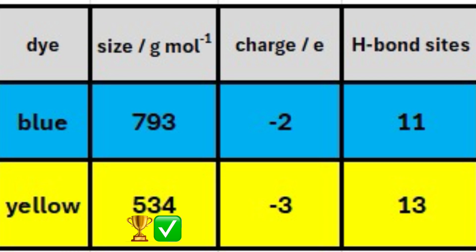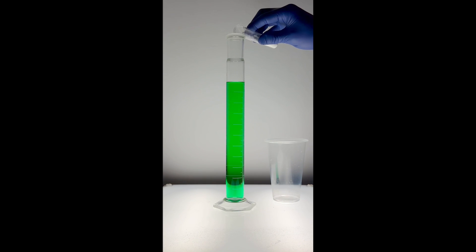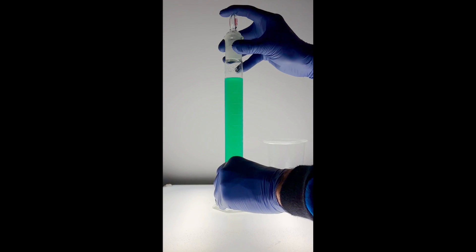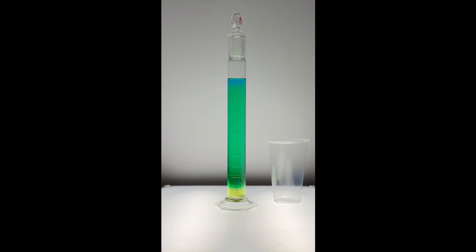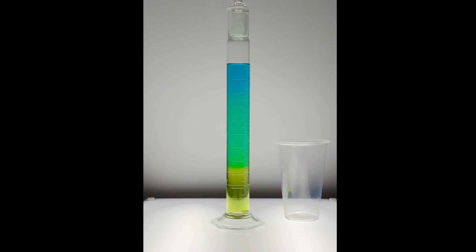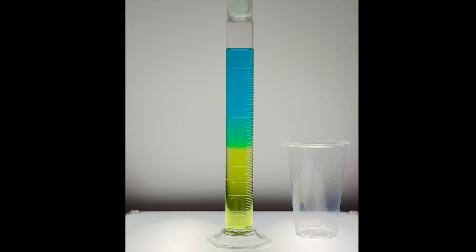So by considering molecular size, electric charge, and hydrogen bonding, we see the yellow dye is more strongly attracted to water than the blue dye. In fact, the attraction between the yellow dye and water is so strong that it remains in the water layer even after salt's been added. The blue dye, on the other hand, is forced out into the alcohol layer.